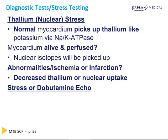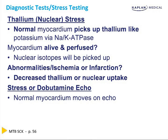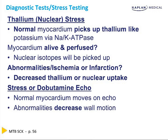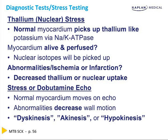Dobutamine echocardiography looks for the fact that echocardiograms should show the wall moving. Muscles that are alive move. But if it's ischemic or infarcted, it won't move. In medicine, we call this dyskinesis, akinesis, or hypokinesis. A dobutamine echo will show decreased wall motion as a sign of ischemia. If it is ischemia only — not infarction — the wall will start to move again after the drug effect, showing that perfusion was the issue.